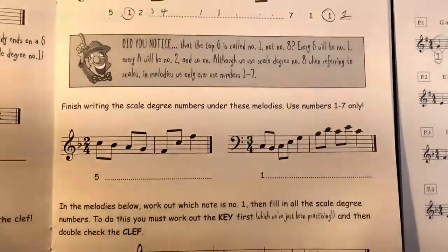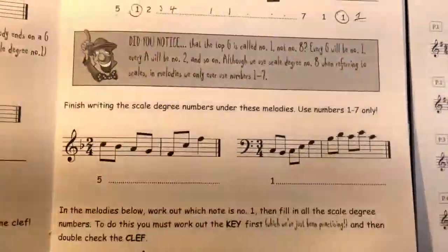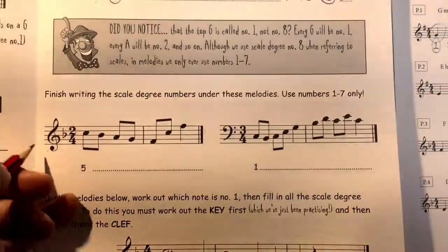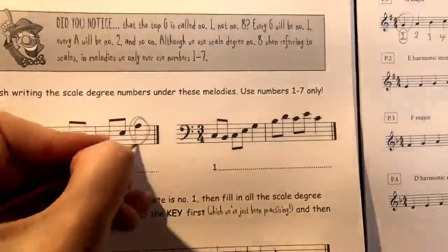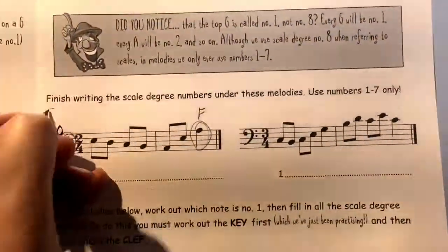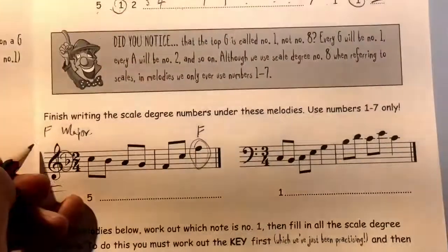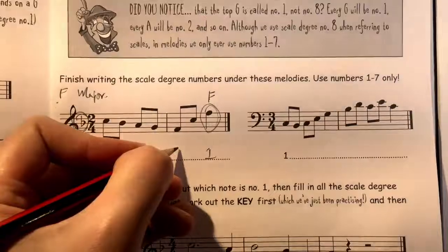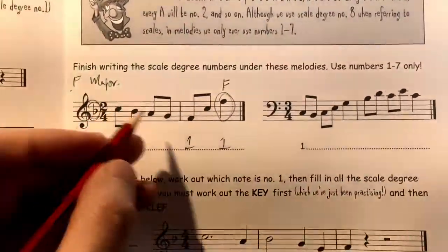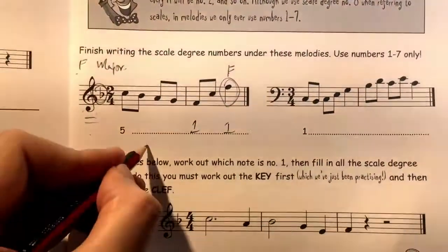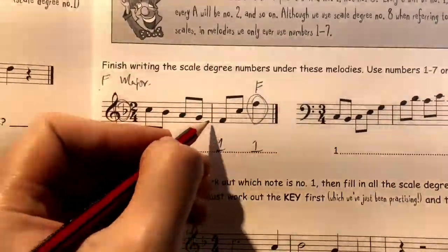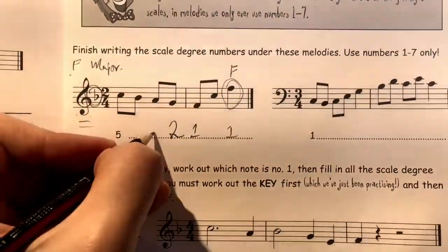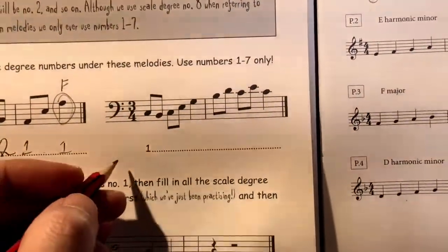The second question: finish writing the scale degree numbers under these melodies using numbers one to seven only. First, work out which scale each melody is written in using the key signature, and secondly check the last note of the tune. This melody must be F major, so all F's must be number one. From there, work out the other scale degrees — F goes up to G one position, so G must be scale degree two.